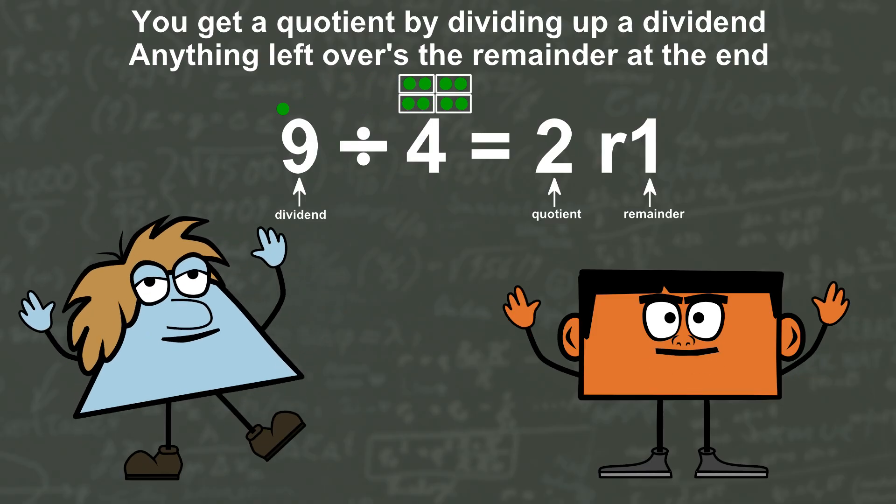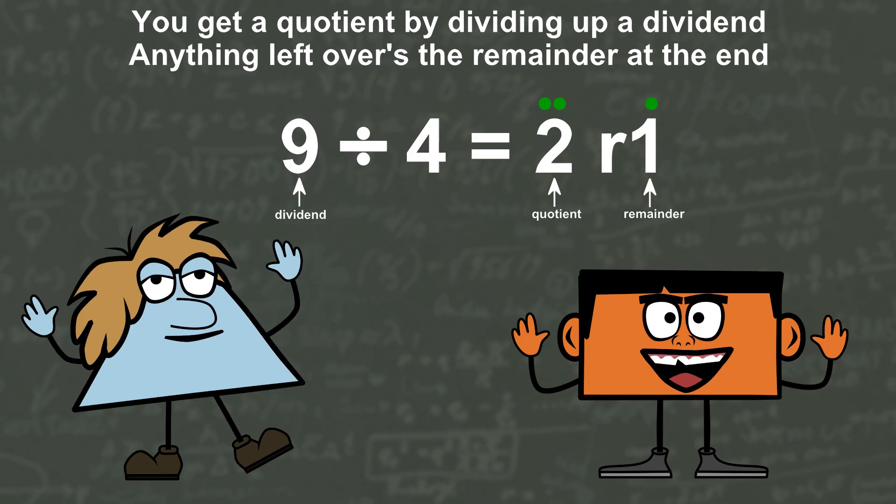You get a quotient by dividing up a dividend, anything left over is the remainder at the end.